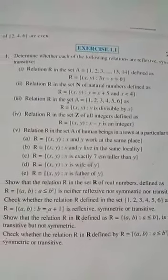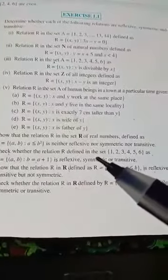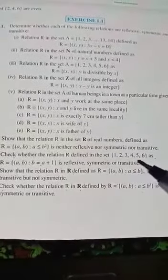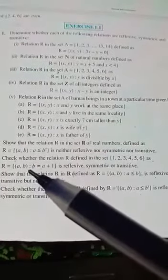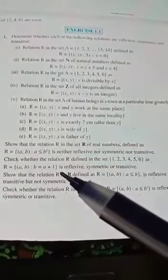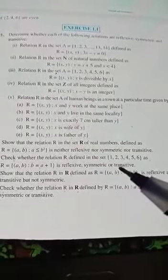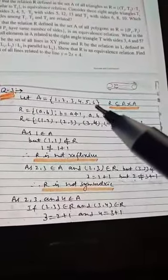Question number 3: Check whether the relation R defined in the set {1, 2, 3, 4, 5, 6} as R = {(a,b) such that b = a + 1} is reflexive, symmetric and transitive. The solution: Let A = {1, 2, 3, 4, 5, 6} and R is a subset of A × A.